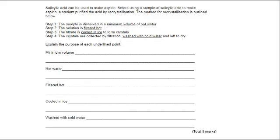So the entire question is on screen at the moment. And now we're going to start working our way through answering the question. Salicylic acid can be used to make aspirin. Before using a sample of salicylic acid, a student purified it by recrystallization. The method is outlined below.